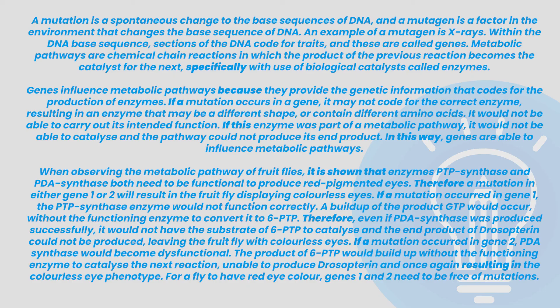Altogether, a complete answer looks like this. A mutation is a spontaneous change to the base sequence of DNA, and a mutagen is a factor in the environment that changes the base sequence of DNA. An example of a mutagen is X-rays. Within the DNA base sequence, sections of the DNA code for traits, and these are called genes. Metabolic pathways are chemical chain reactions in which the product of the previous reaction becomes a catalyst for the next, specifically with use of biological catalysts called enzymes. Genes influence metabolic pathways because they provide genetic information that codes for the production of enzymes. If a mutation occurs in the gene, it may not code for the correct enzyme, resulting in an enzyme that may be a different shape or contain different amino acids — it would not be able to carry out its intended function. If this enzyme was a part of a metabolic pathway, it would not be able to catalyse and the pathway could not produce its end product. In this way, genes are able to influence metabolic pathways.